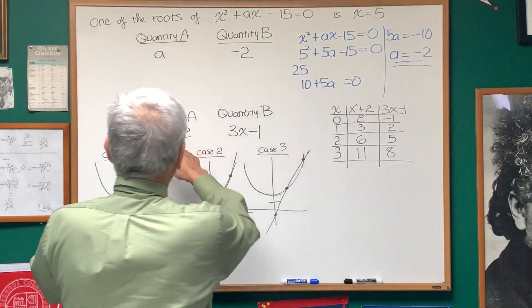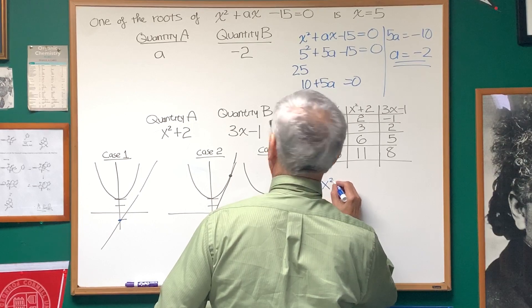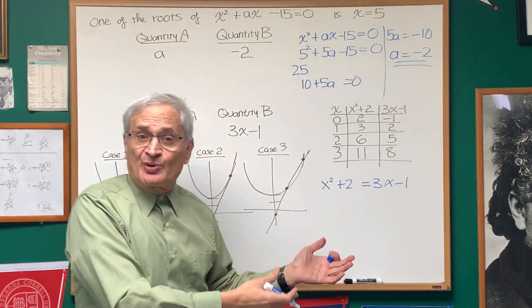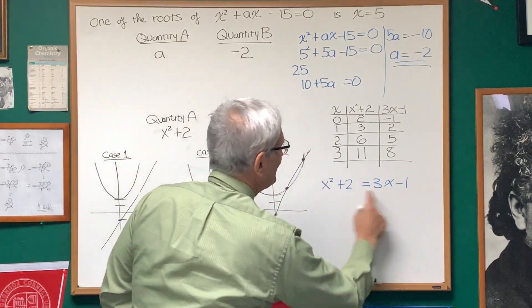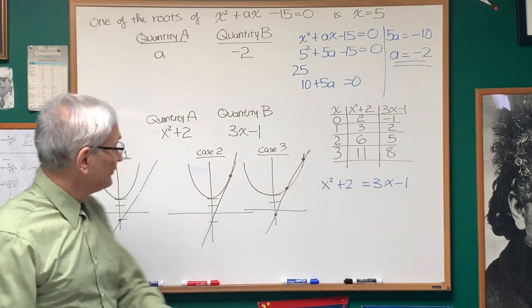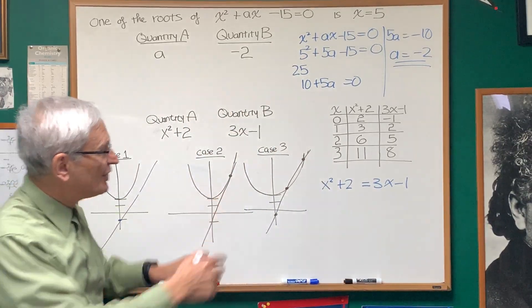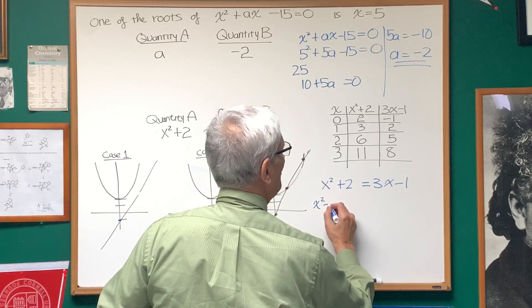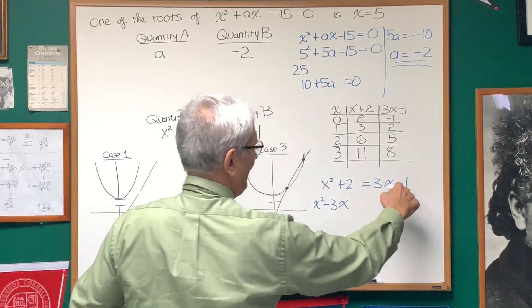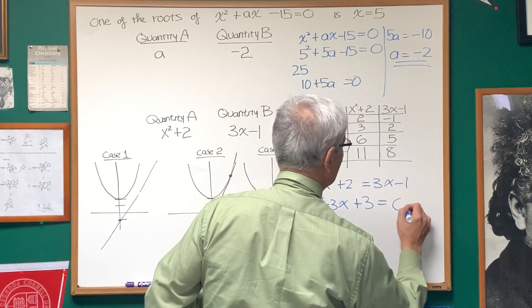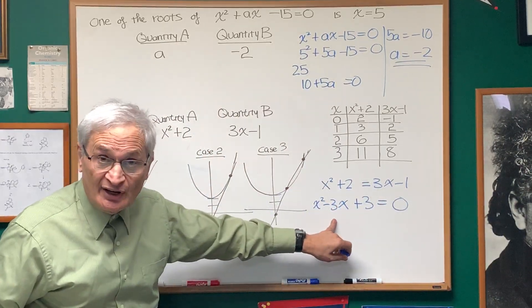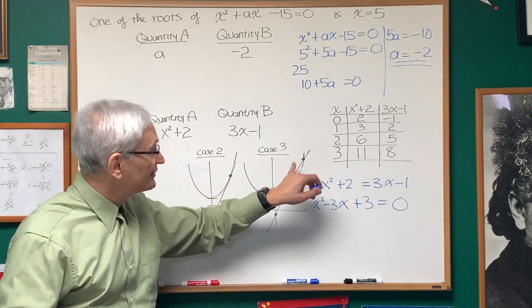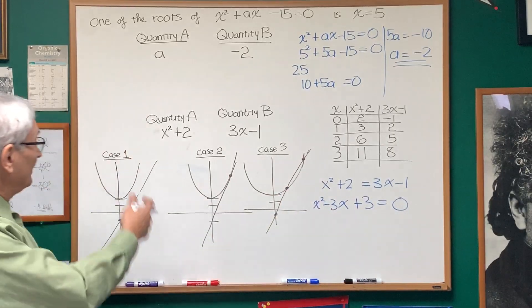So how do we determine? Is it case 1, case 2, or case 3? Very simple. Let's set the two equations equal to each other. x squared plus 2 equals 3x minus 1. This is an algebraic way of asking the graphical question: where do these two graphs intersect? Do they intersect at no point, at one point, or at an interval of points? So let's solve this. Let's bring everything over to one side. x squared minus 3x plus 3 equals 0. It's a quadratic. We're going to find the roots of this quadratic. If the quadratic has one root, it's case 2. If the quadratic has two roots, it's case 3. If the quadratic has no roots, it's case 1.